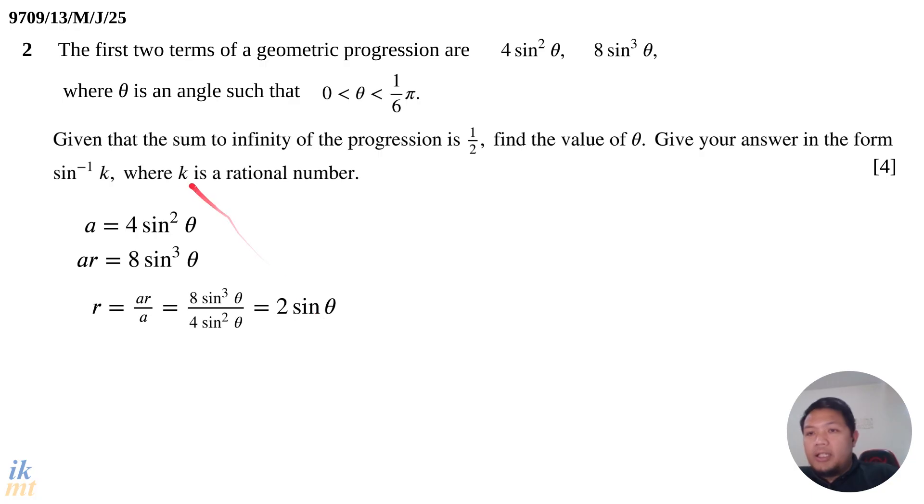I want you to think about whether sum to infinity even exists for this geometric progression. r is 2 sin θ. The sum to infinity is 1/2, which is a finite number. That means only when r is between -1 and 1 will this sum to infinity exist. Think about the values of θ here between 0 and π/6.